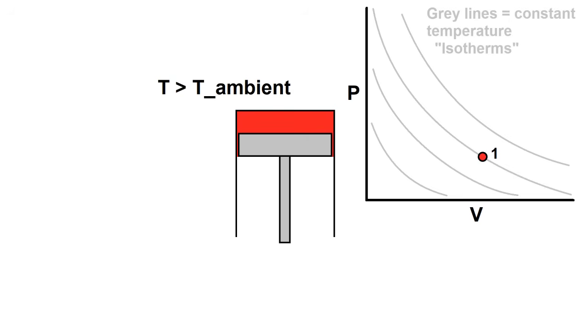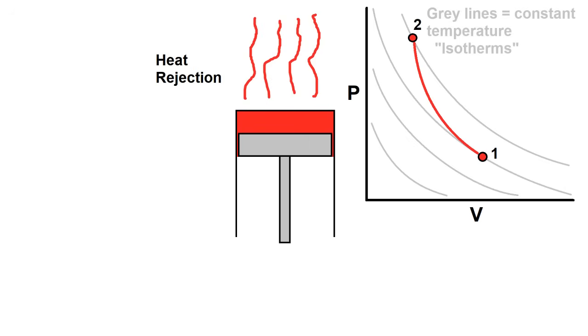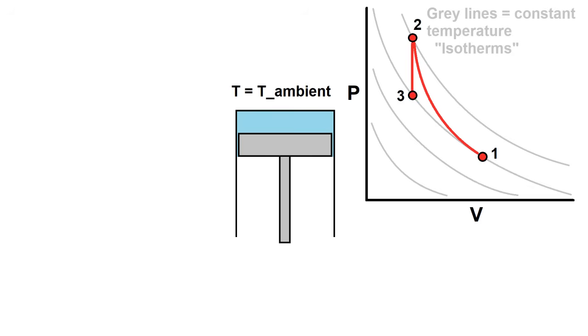When the air is compressed, volume goes down and pressure goes up, but temperature goes up too, so point two is up and to the left of point one, and also on a different isotherm line on the graph. If we leave the piston in place for some time, and let the heat from compression dissipate, we'll return to ambient temperature, but now still at a higher pressure and lower volume than we started with. This is point three.